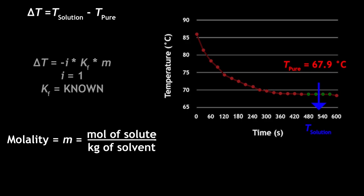So for each trial we will determine the change of freezing point by using this equation. We can use the freezing point depression equation. Delta T is equal to the negative i which is your van Hoff factor which we know to be 1 times Kf which is your molal freezing point constant and Kf is known and lowercase m which is molality.